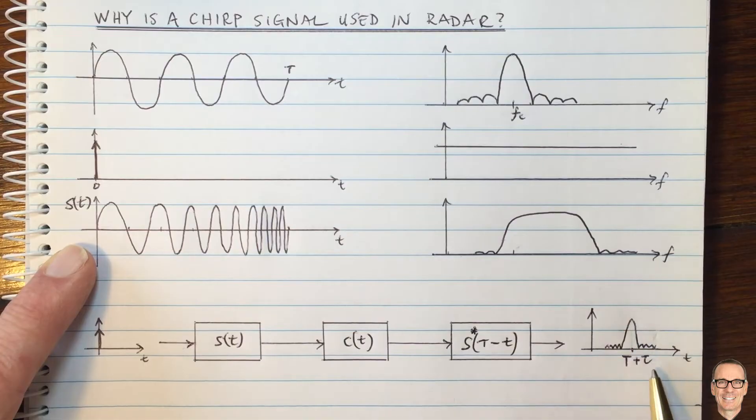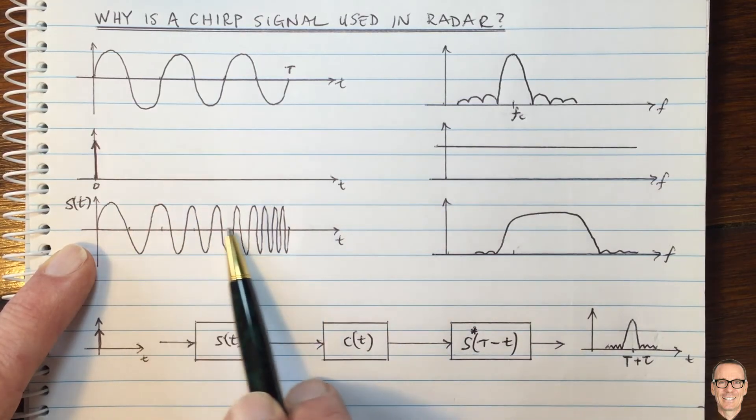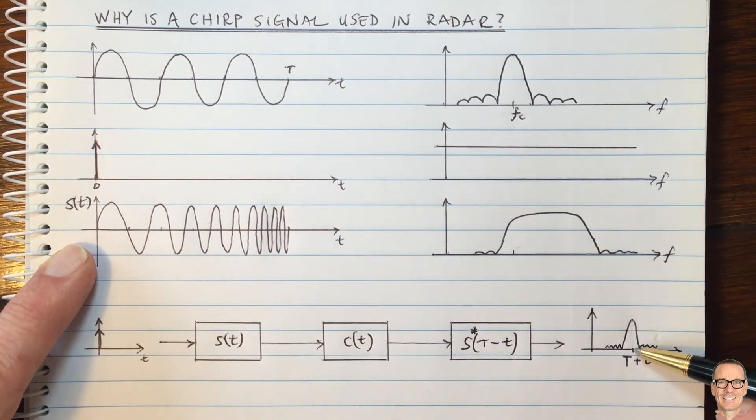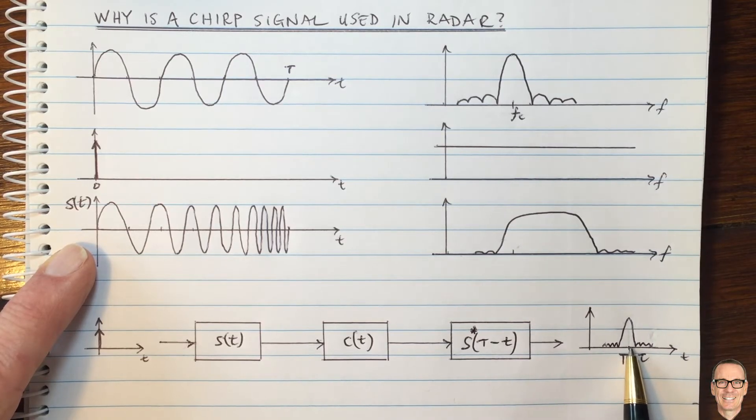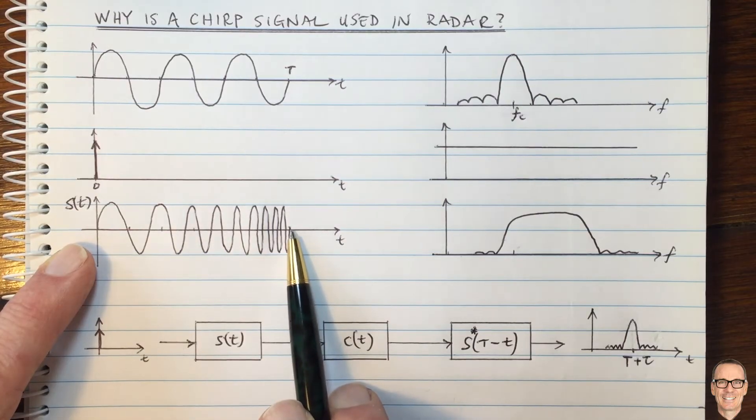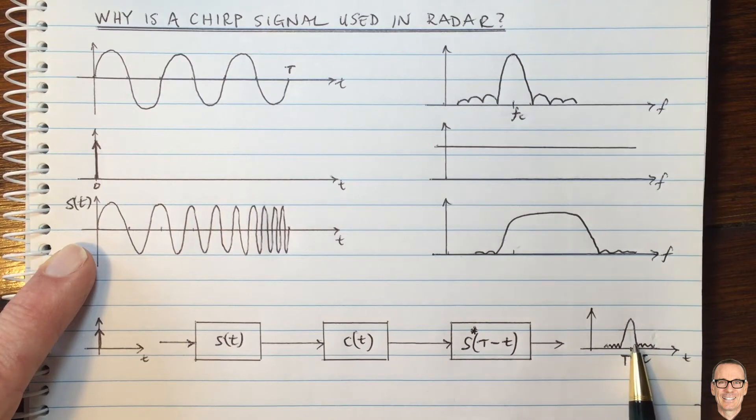And the peak of this function comes at a time, which is the delay of the round-trip time for propagation to the target, tau_r, plus capital T, which was the length of time of your CHIRP function. And although this is not an exact delta function, it still is very much more compressed in time than the time that you spent to send the overall CHIRP. So you are approximating this ideal case of a delta function.